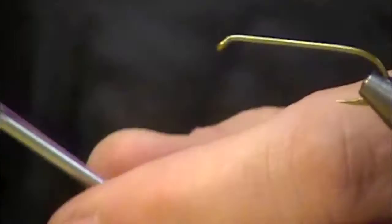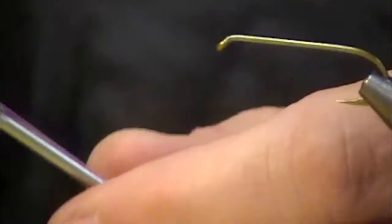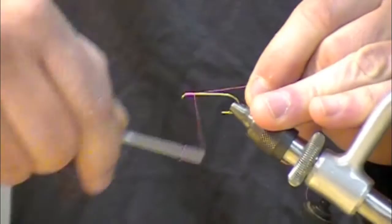So I'm just going to, this is just a hook shank here, I'm going to take my thread cover up the whole deal. A dubbing loop is as simple as this.